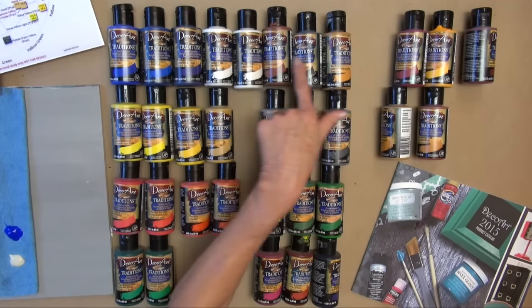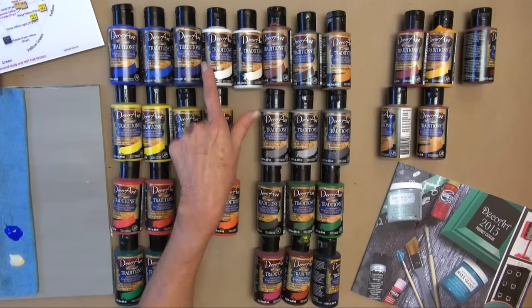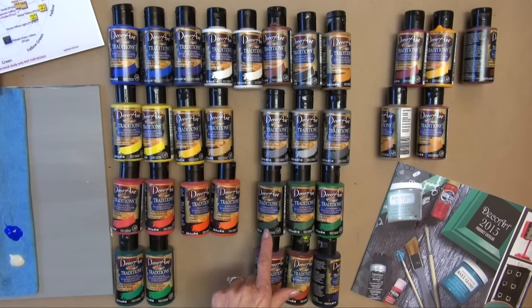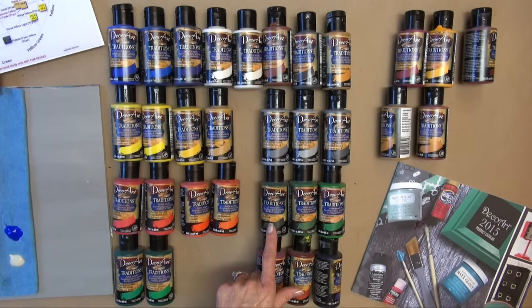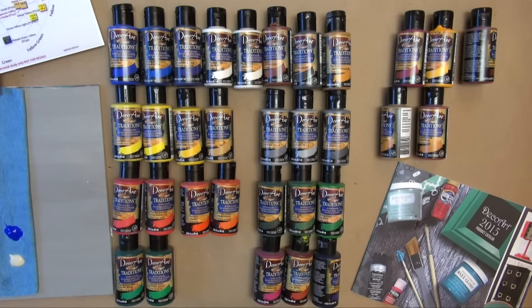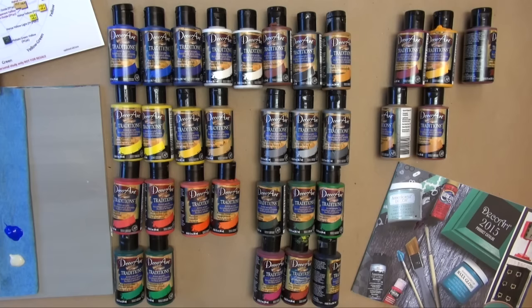We've got your earth colors up here for toners. We've got three different grays: values six, eight, and three. And we've got a couple different greens. These are not pure pigments, they're mixes: sap green, pine green, medium green.